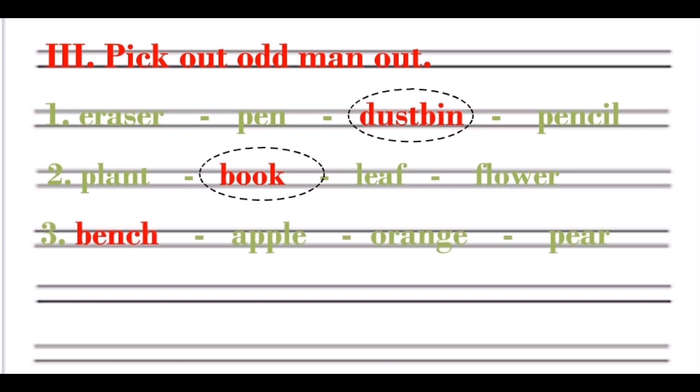Set 3: bench, apple, orange, pear. In this sequence, all are the names of the fruits except bench.